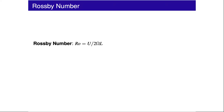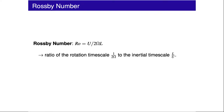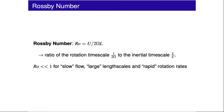We have seen that the Rossby number, Ro, is U on 2ΩL, which can be thought of as the ratio of the rotation timescale, 1 on 2Ω, to the inertial timescale, L on U. So the Rossby number is small when the flow is slow, the length scales are large, or the background rotation rate is rapid.